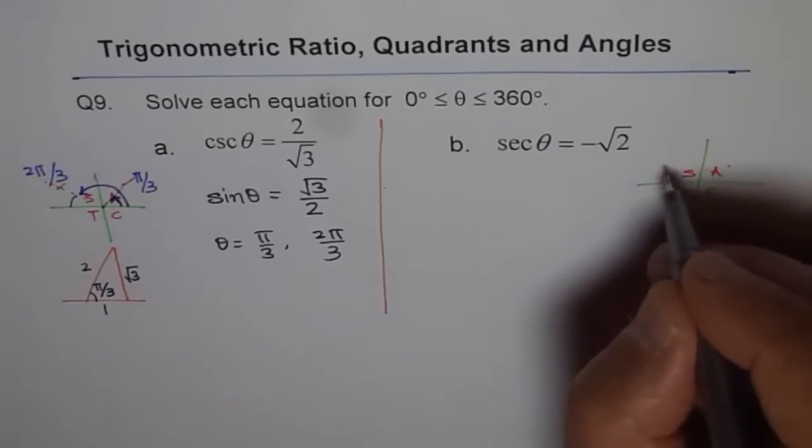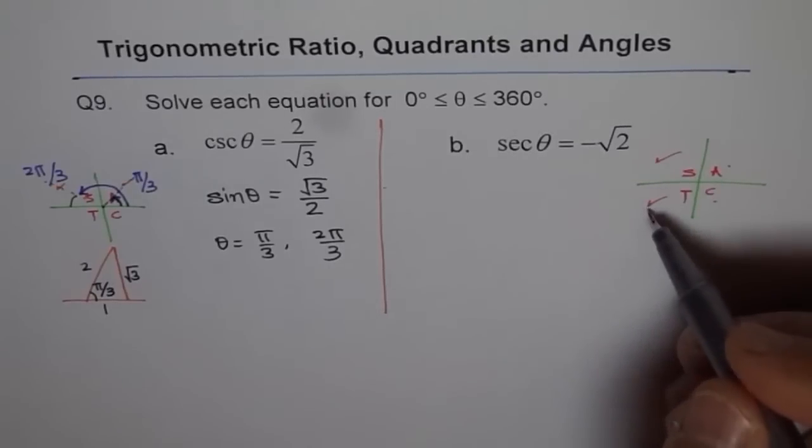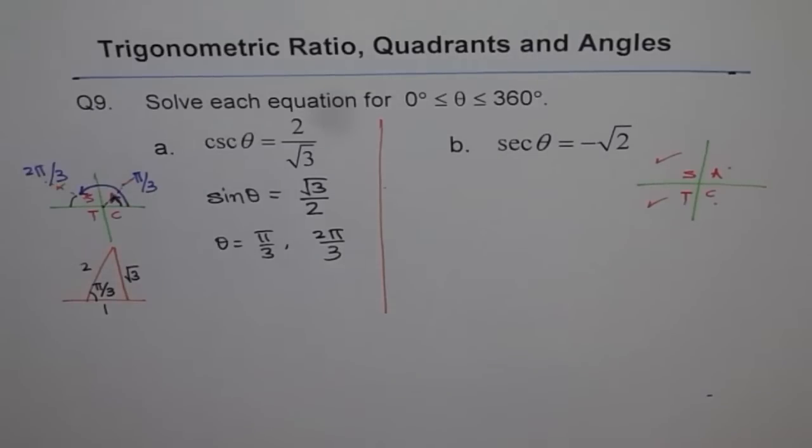That means secant theta is negative, so you are in these two quadrants. In both the quadrants, secant theta is going to be negative. Let us try to figure out what is the related acute angle.